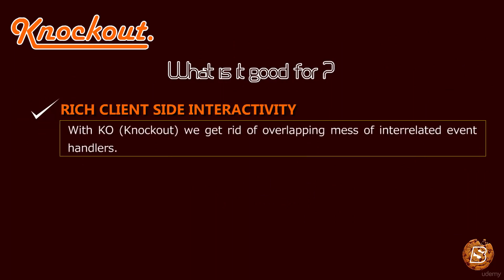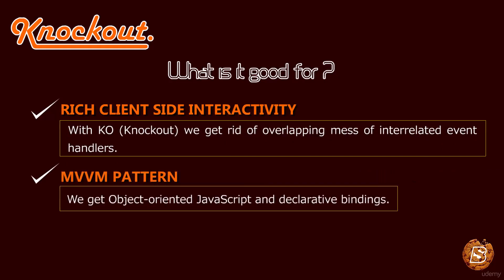With Knockout.js we get rid of the overlapping mess of interrelated event handlers. With the MVVM pattern — that is, Model-View-ViewModel — we get object-oriented JavaScript and declarative bindings, and wide browser support is always there. Knockout.js is good when your UI gets non-trivial and has a few overlapping behaviors, because in that case things can get tricky and expensive to maintain.